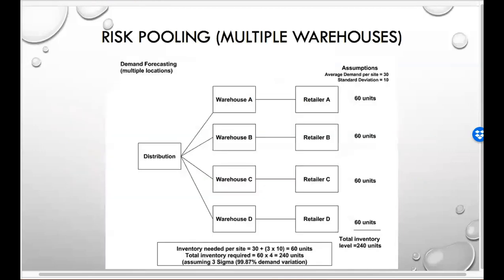So I'm going to go through this example. Let's say we have a system where we have one distributor with four warehouses and four retailers. We're also going to assume that the average demand per site is 30, and the standard deviation is 10.